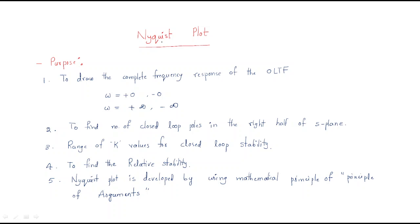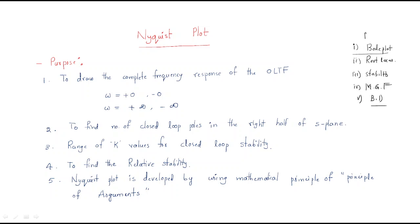In this session we will discuss the Nyquist plot. We have discussed many plots — the Bode plot, root locus, stability, Mason's gain formula, and block diagrams. We also discussed the polar plot. The extension of the polar plot is the Nyquist plot. By extending the polar plot, we construct the Nyquist plot.